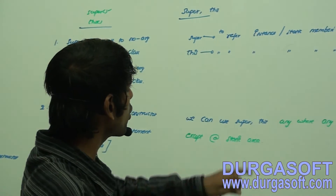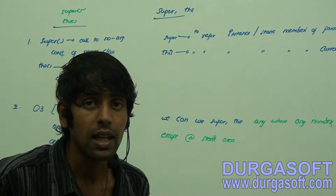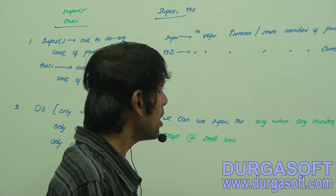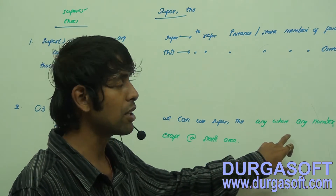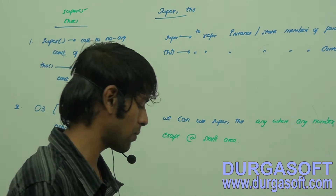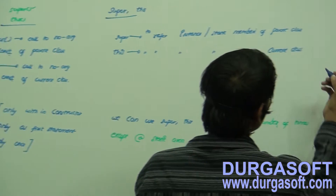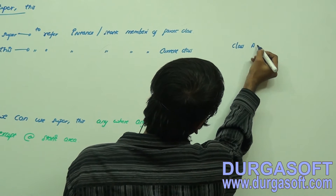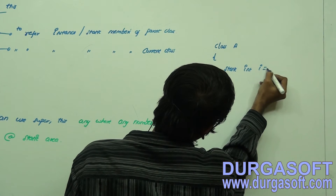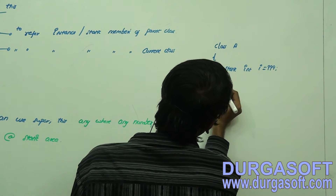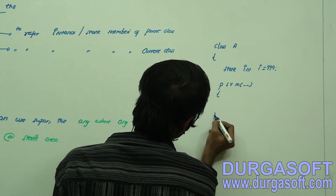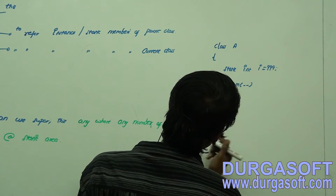Before moving on, I'm going to use super and this to refer to static members of our class. Most of the guys will get confused here. Super and this can be used anywhere except in static areas, and you can also use them to refer to static members. Try to observe this small piece of code — class A with static int i equals 999.